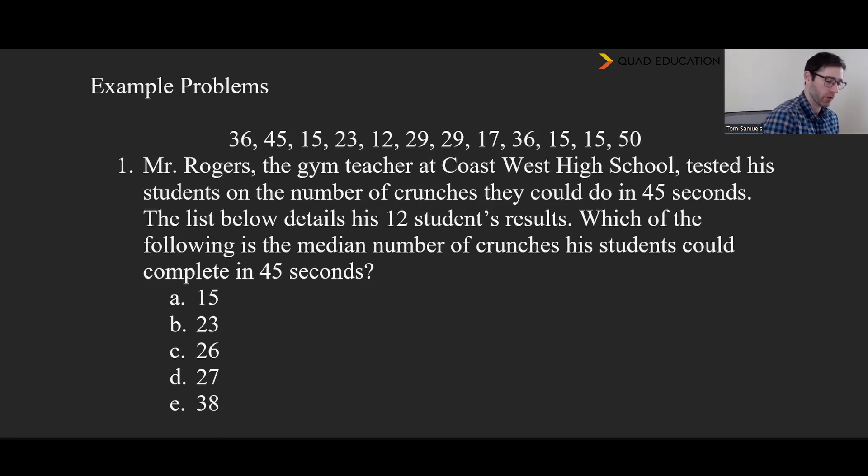OK, let's take a look. So pro tip here, when you have a word problem, you can always look at the end and you can see if you can skip some work. So let's look at the end and see what the question is. Which of the following is the median number of crunches his students could complete in 45 seconds? So we're looking for the median. And honestly, Mr. Rogers, Coast West High School, very silly and totally irrelevant. They do at least tell me that there are 12 values here. And so I'll know that I basically need to get the sixth and seventh value and that'll kind of be it.